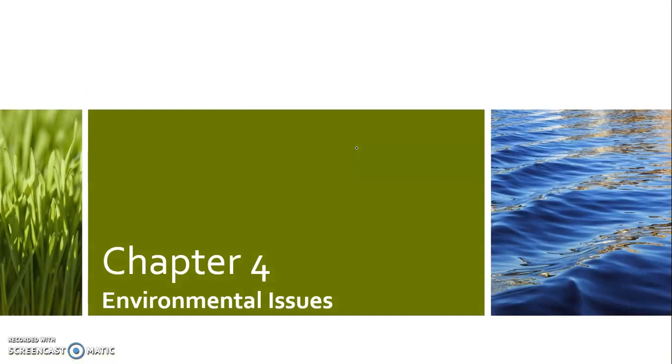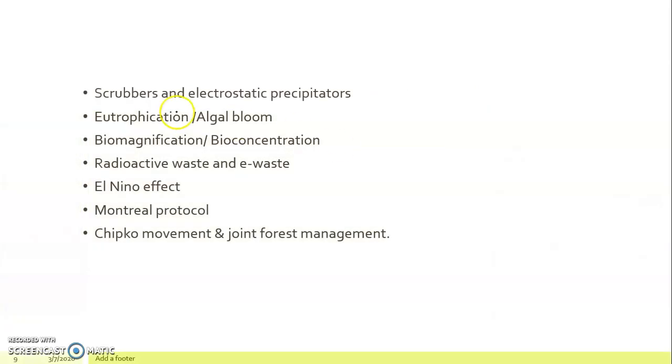Next is Chapter 4, Environmental Issues. Under this you have to do scrubbers and electrostatic precipitators, eutrophication, algal bloom, biomagnification, bioconcentration, radioactive waste and e-waste, El Nino effect, Montreal protocol, Chipko movement and joint forest management.